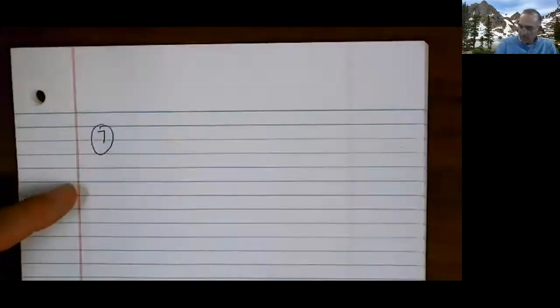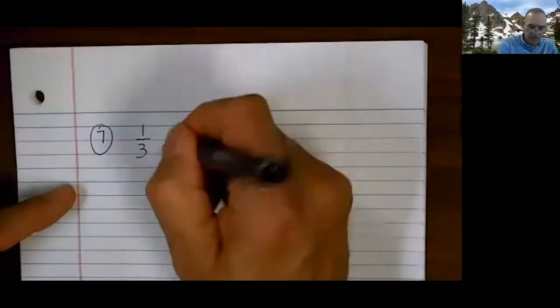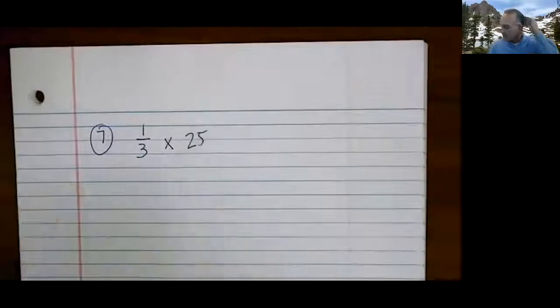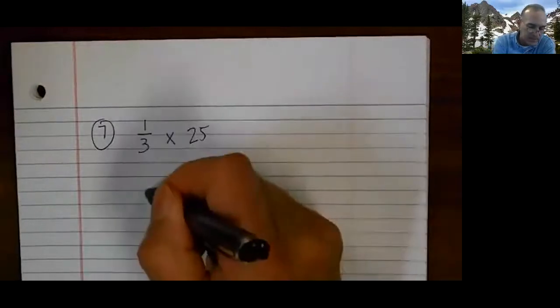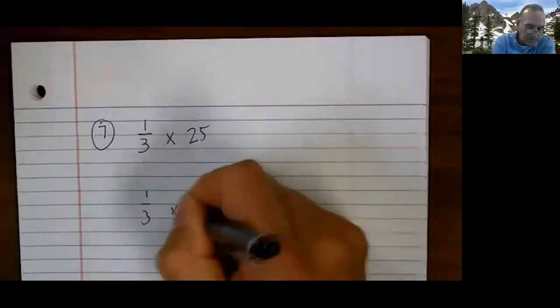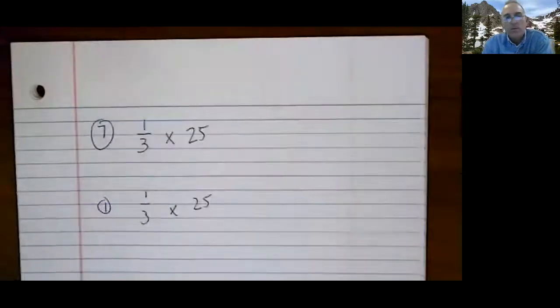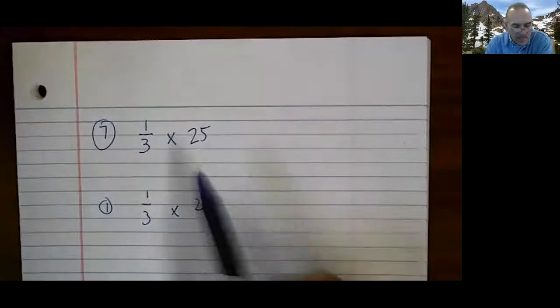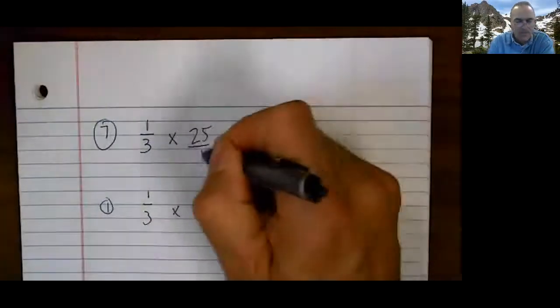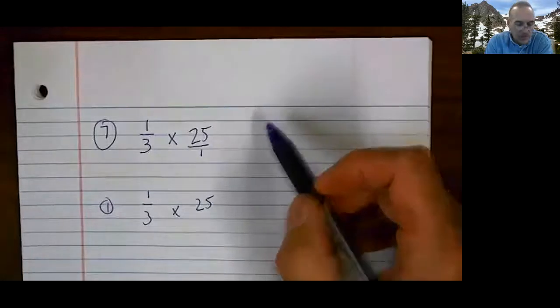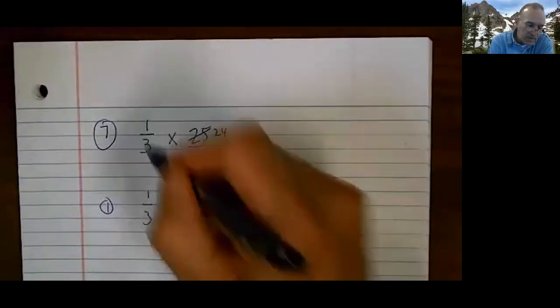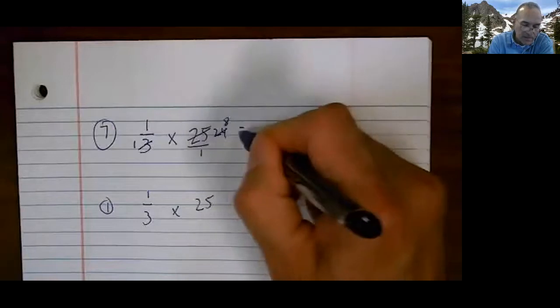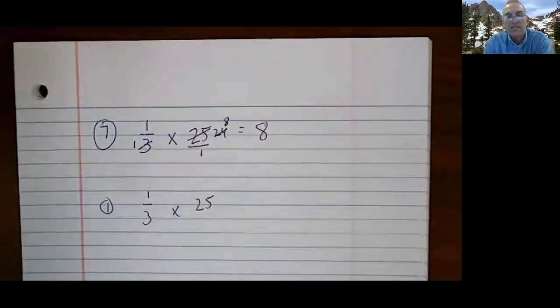Let us do number seven. Number seven looks like this. One-third times 25. What am I going to do there? I see a couple ways of doing this. So let's do it two different ways. I'm estimating. What's one-third of that amount? I cannot reduce, can I? No. But if I were to change this number to 24, now I can go three goes into three once, three goes into 24 eight times, and I get eight as an estimate.